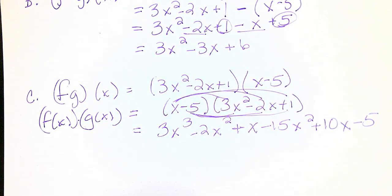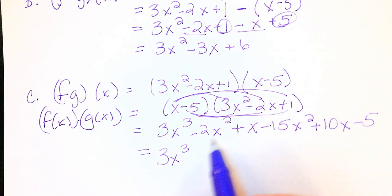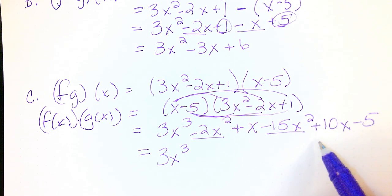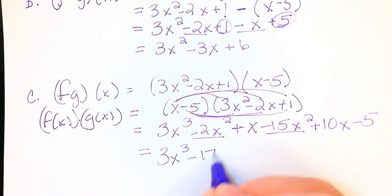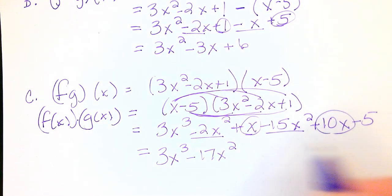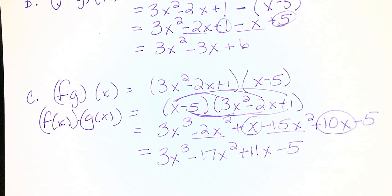And now we need to add like terms. So this is going to be 3x³ - 2x² - 15x², which is -17x². x and 10x is going to give me 11x and -5. So that will be your final answer on multiplying those two functions together.